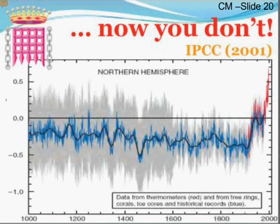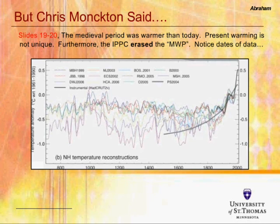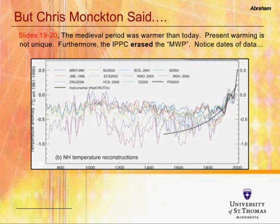I'm showing a slide with 13 different temperature reconstructions going back to approximately 700 AD. On the right-hand side is the modern time period, and all reconstructions show temperatures increasing in the modern period. They show a cool period in the 1600s–1800s and a warm period around 1000–1100 AD — the so-called Medieval Warm Period. Importantly, the Medieval Warm Period does exist, but most researchers don't think it was as warm as today, and many don't consider it global in extent. There's also a lot of scatter between curves going back in time, indicating significant uncertainty.